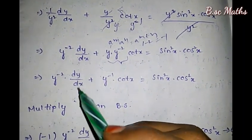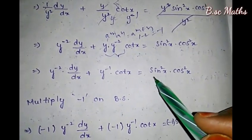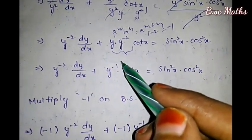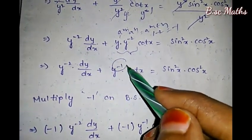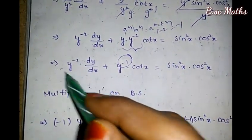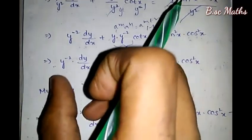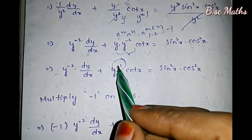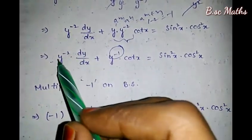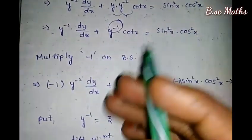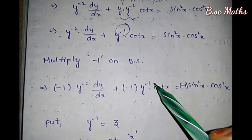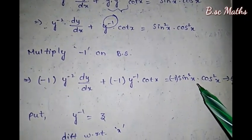We have y⁻² times dy/dx, plus y⁻¹ times cot(x), equals sin²x·cos²x. Next, we multiply by minus 1 through the whole equation. So minus 1 times y⁻² dy/dx, plus minus 1 times y⁻¹ cot(x). This is equation number 1.